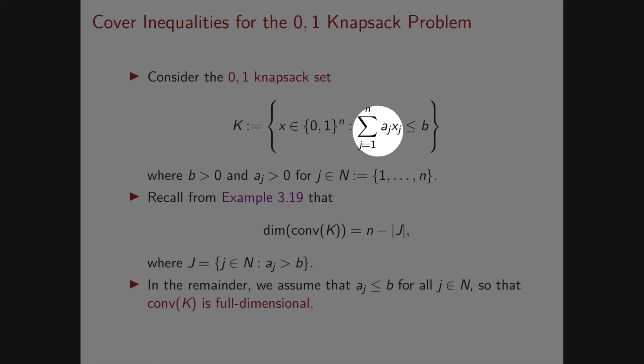In our knapsack problem, the aⱼ are the weights of each of our objects and b is the total capacity, the weight limit of our knapsack.